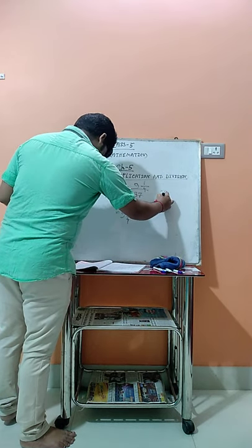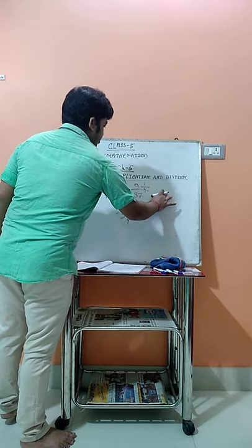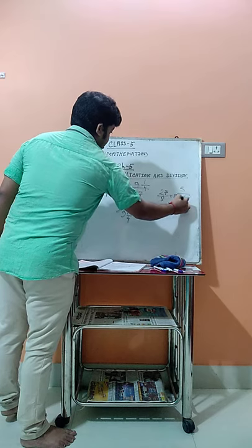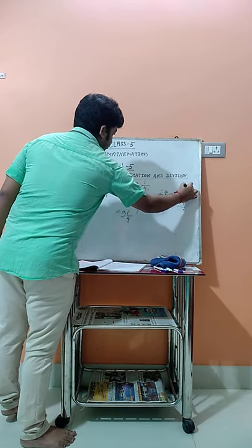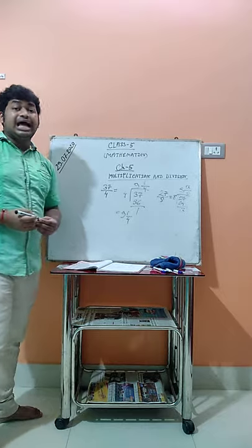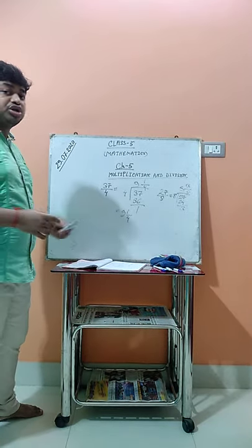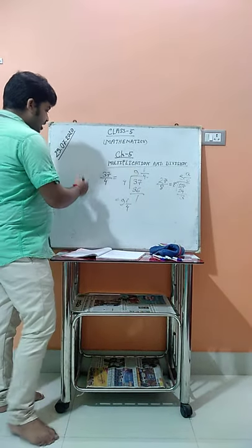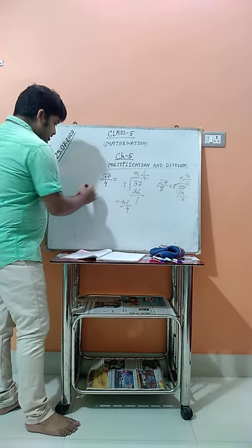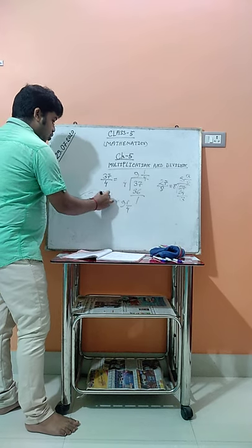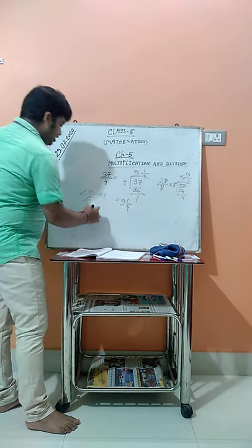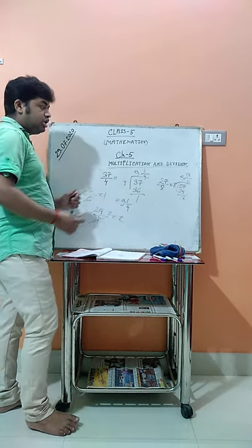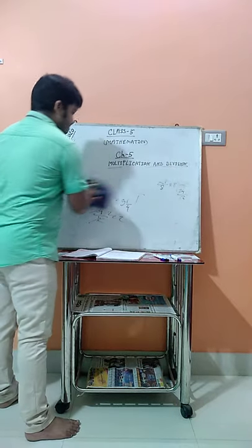Next is 27/8. Since it is not possible to divide evenly, we divide: 8 times 3 is 24, remainder 3. So the answer is 3 and 3/8. Then 6/6: that equals 1, a whole number. And 24/12: 12 times 2 is 24, so the answer is the whole number 2. This is how you get the answer for this type of problem.